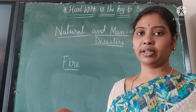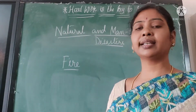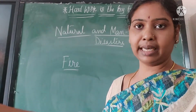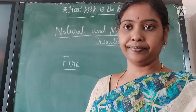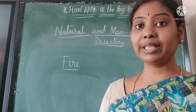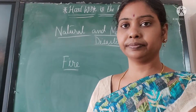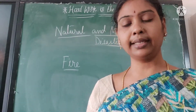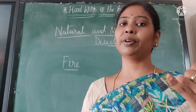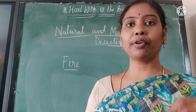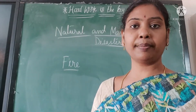Most fire accidents happen because of carelessness only. 60% of fire accidents happen because of bad wiring. In case of a fire accident, we have to evacuate the place and pull the fire alarm. We have to keep our head low so that we do not inhale a lot of smoke. The do's in case of a fire accident: be very careful with electrical wiring, ensure elder supervision for children, and use only ISI certified appliances.